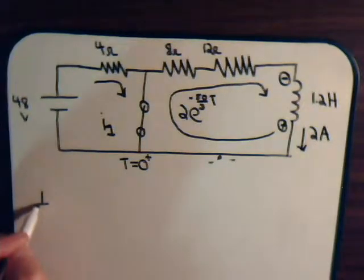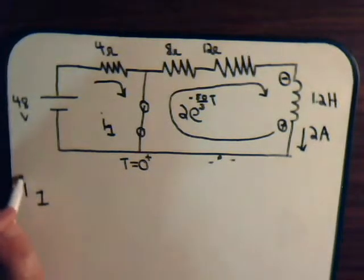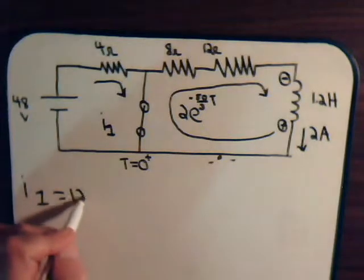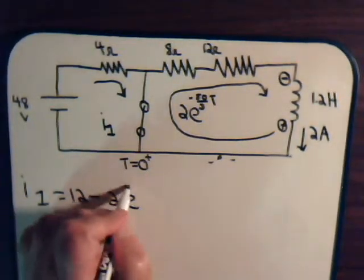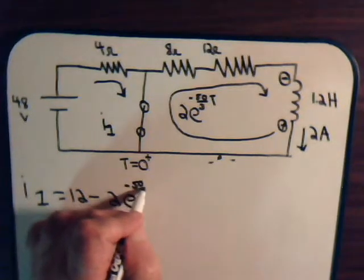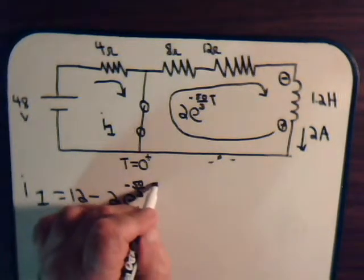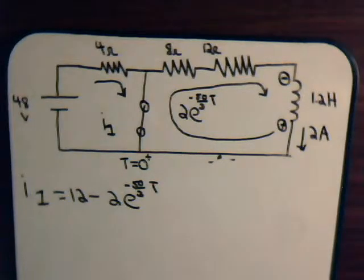So you would think, well that should be pretty simple then. I1 would just equal 12 minus this decay current. And that would be the solution. And indeed, this is the correct solution.